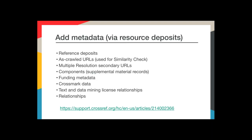You can add some types of metadata to an existing record after you've registered your content. This includes reference deposits — if you participate in our cited-by service or just want to send us your references, we're happy to have them. Also funding data components, supplemental material records, Crossmark data, text and data mining license information, and relationships between DOIs and other identifiers. So you can create a record for a journal article with just bibliographic metadata, then later submit just the reference list, and subsequently add Crossmark, funding, and license data.